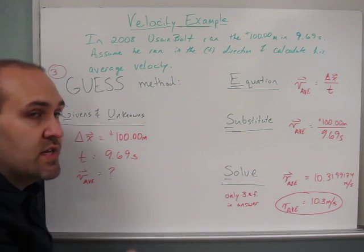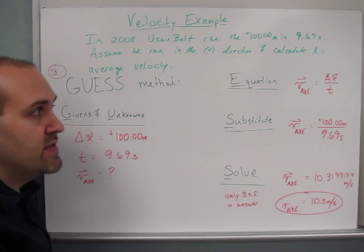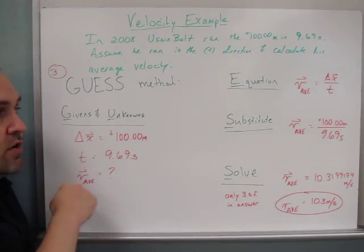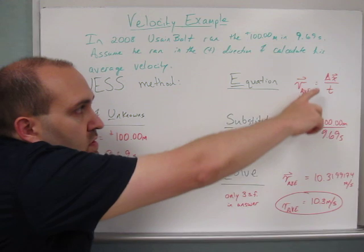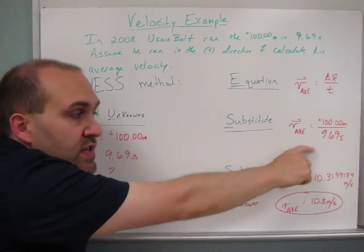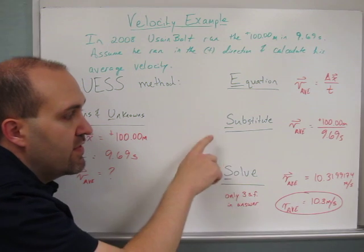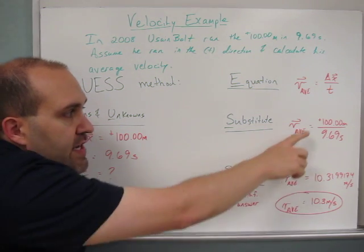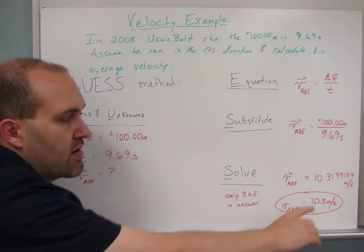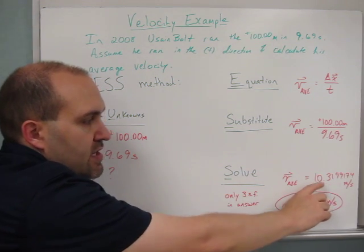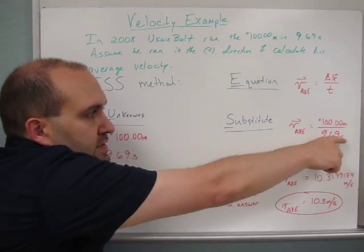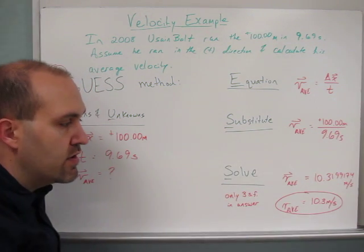In the next step, substitute, then I'm going to replace the knowns with the information that I have over here in my given and unknown column. And so the delta x is 100 meters and the time is 9.69 seconds. And in the final step we'll solve. So go ahead and take your calculator and divide 100 by 9.69, and your calculator might spit out something like this: 10.3199174, and that's in meters over seconds, or meters per second—that's the standard unit for velocity.